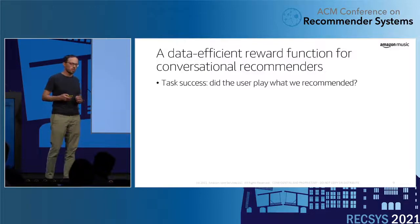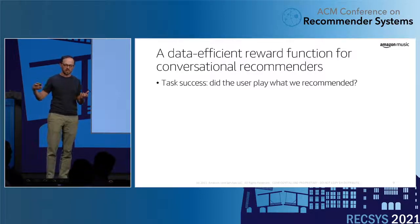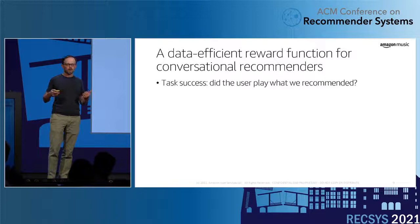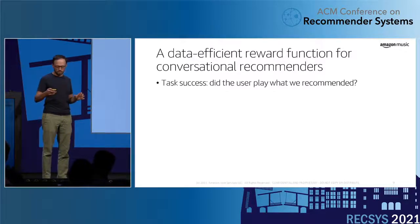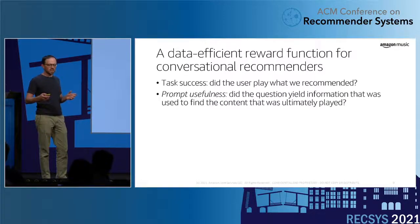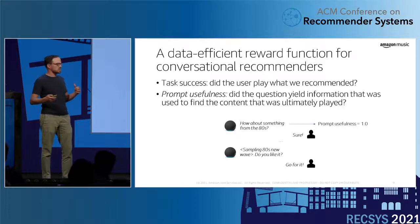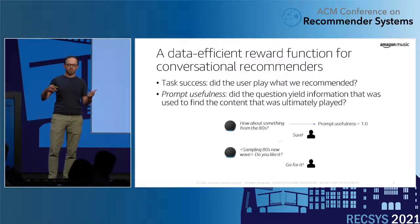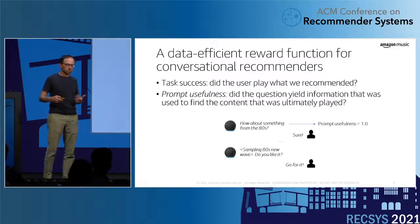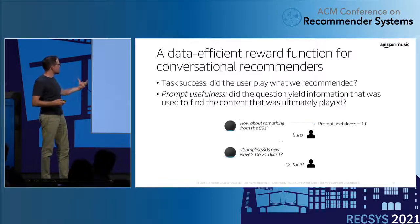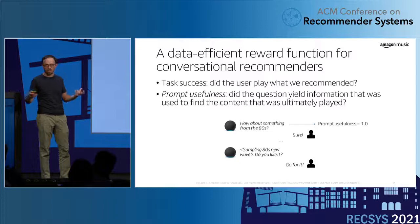What should we optimize for? In our experience, it would make sense to optimize for task success — that is, did the user end up playing something we recommended at the end of the conversation? However, for our first models, we decided to focus on something potentially less noisy, which we call prompt usefulness. For a prompt to be successful, not only does the conversation need to be successful, but also the prompt needs to yield an answer from the user that's actually useful in finding the entity that gets played at the end. For example, if we suggest 80s music and the user says yes and we play 80s music at the end, the usefulness is one. If we played 70s music at the end, the usefulness of that prompt would have been zero.